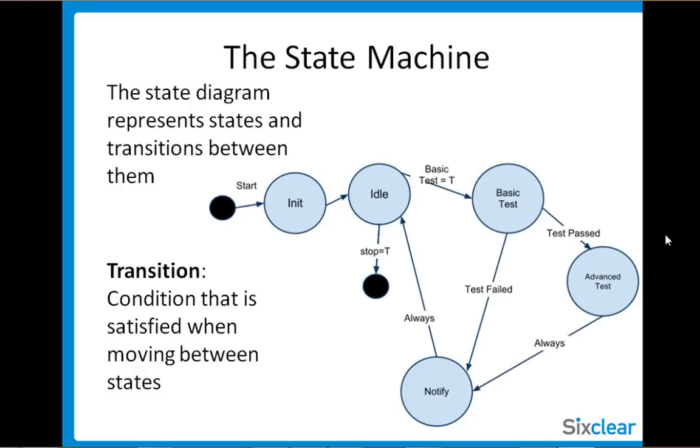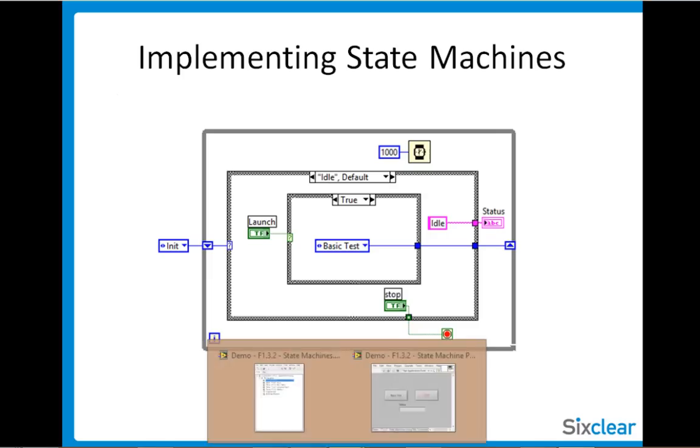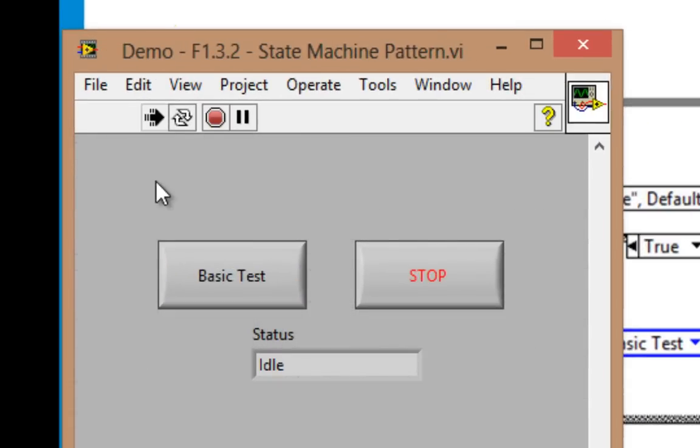We always begin in this design phase, and then we go and implement in LabVIEW code with the state machine. So let's look at it. I'll hit the run button. And we see we've gone from initialized to idle. And if I click on basic test, we move to the basic test, and then notify, because it looks like the basic test failed.